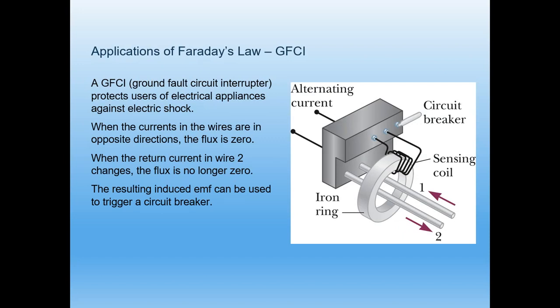An application of Faraday's law is the GFCI — the Ground Fault Circuit Interrupter — which protects the user of electric appliances against electric shock. When the currents in the wires are in opposite directions, the flux is zero. When the return current changes, the flux is no longer zero, and the resulting induced EMF can be used to trigger a circuit breaker.